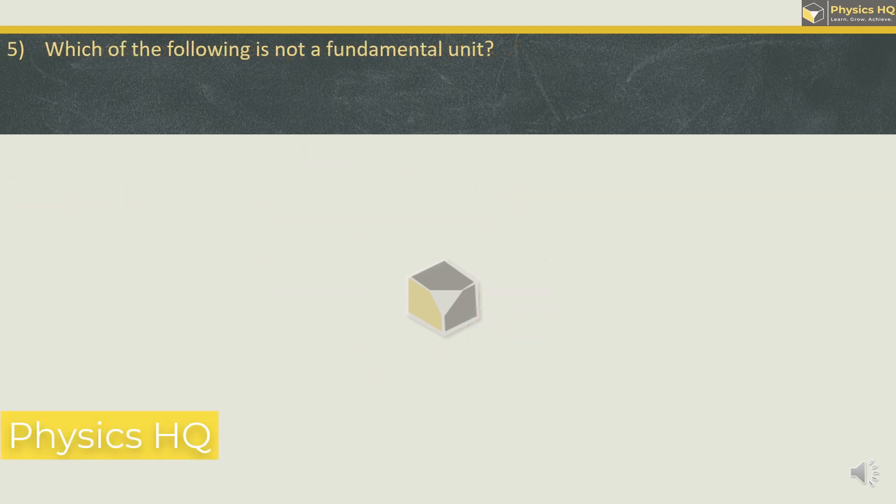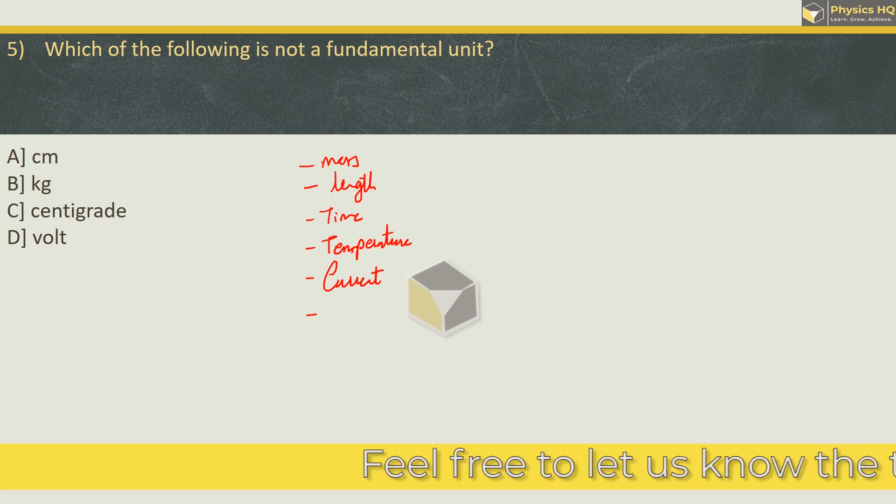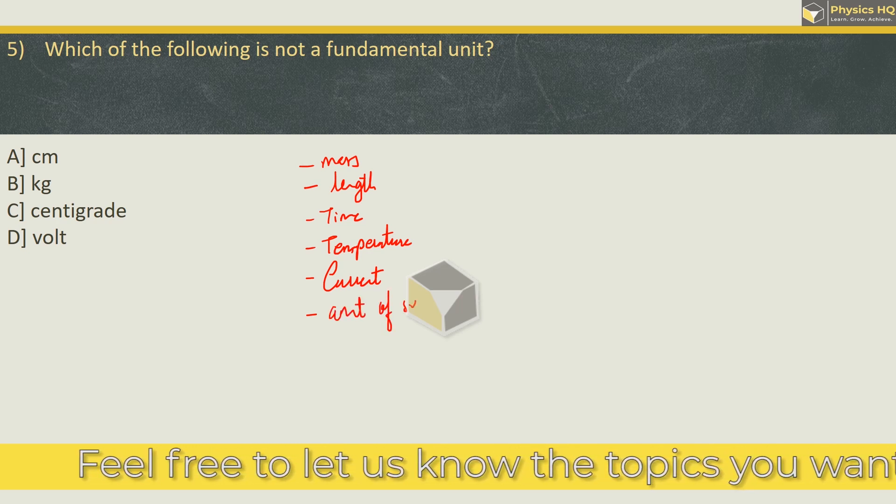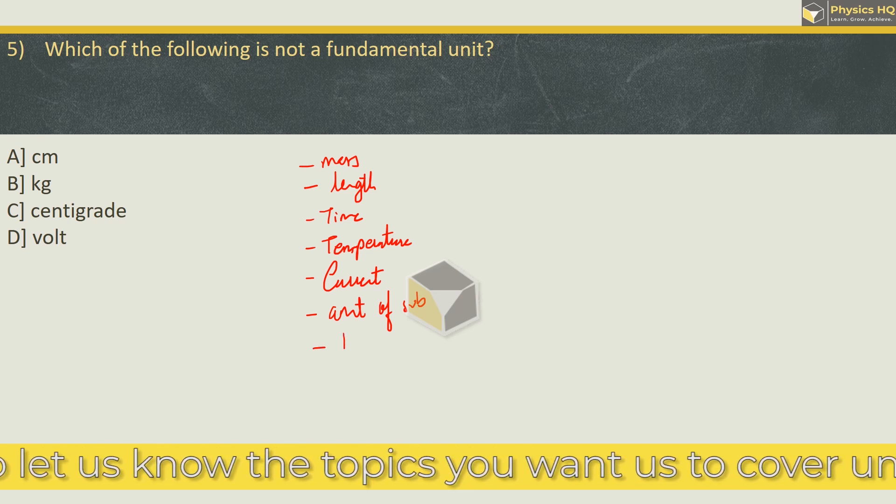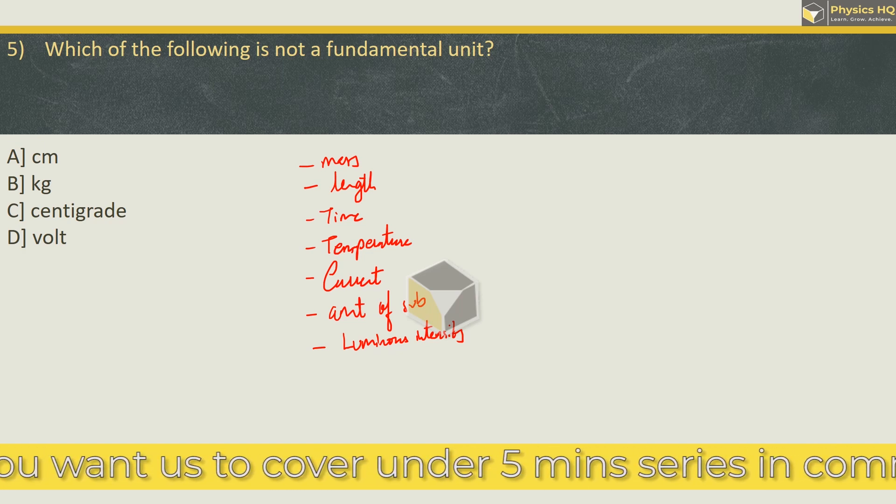Let us go ahead with the next sum. Which of the following is not a fundamental unit? Centimeter, kg, centigrade, or volt. So let me tell you fundamental units are units of fundamental quantities and there are seven fundamental quantities. First one is mass. Then we have length. Then we have time. Then we have temperature. Then we have current. Then we have two more fundamental quantities. One is amount of substance and last one is luminous intensity. So these are fundamental quantities and their units are called as fundamental units.